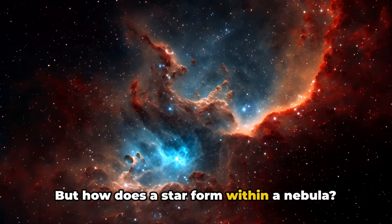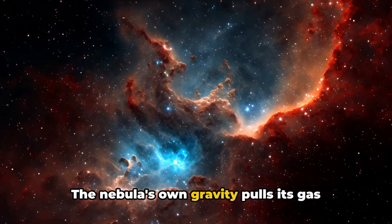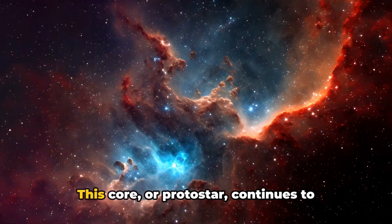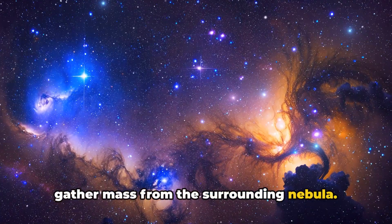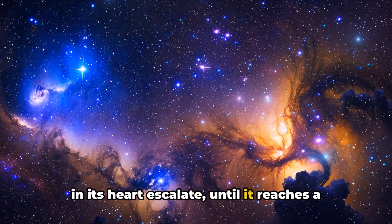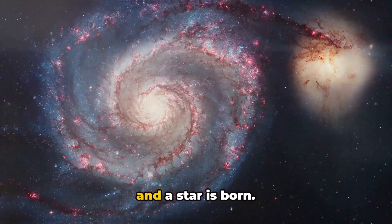But how does a star form within a nebula? It all begins with gravity. The nebula's own gravity pulls its gas and dust inward, creating a dense core. This core, or protostar, continues to gather mass from the surrounding nebula. As it grows, the pressure and temperature in its heart escalate until it reaches a critical point. At this juncture, nuclear fusion starts, and a star is born.